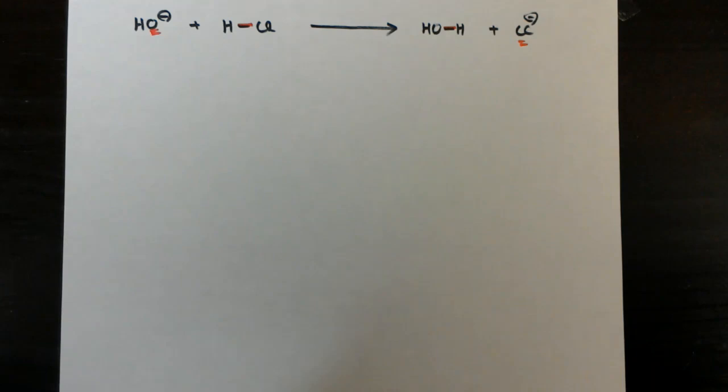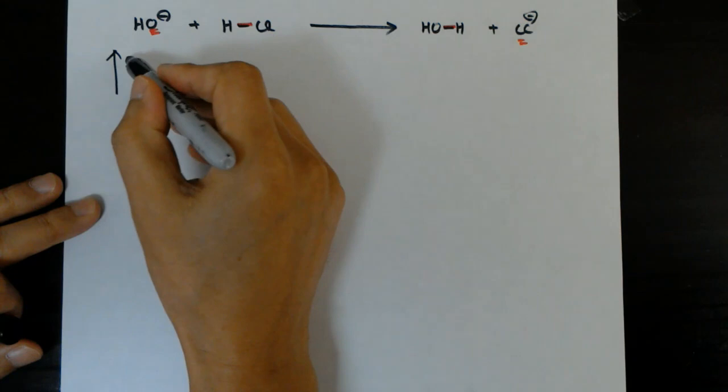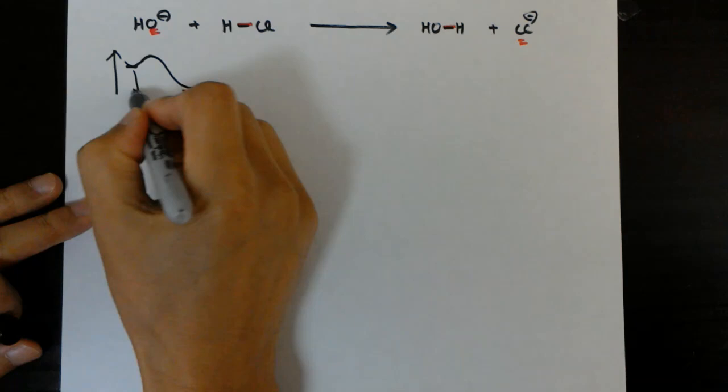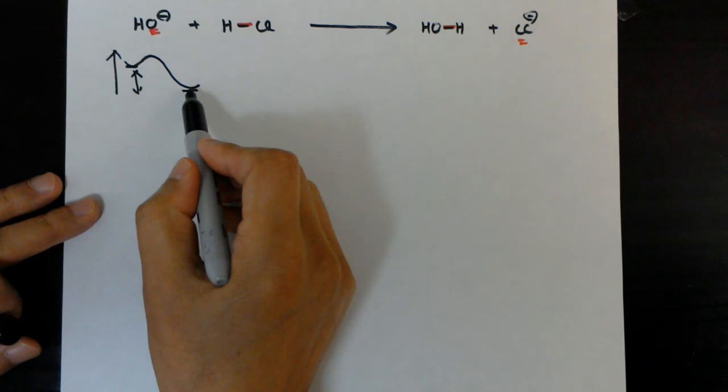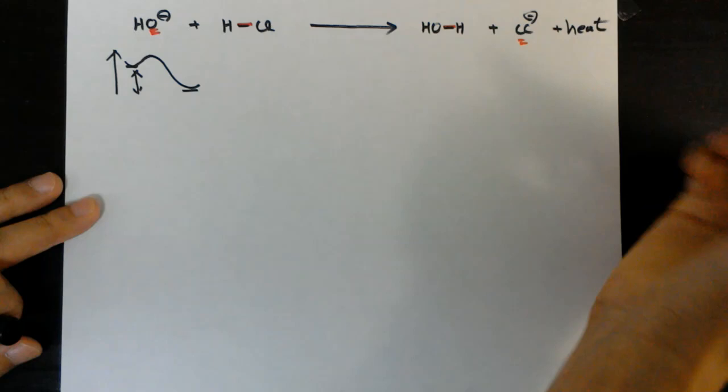You have an exothermic reaction going through the transition state, which we'll talk about briefly later. That amount of heat of formation comes out of the reaction. So in the chemicals, you have that much less energy that came out as heat energy — that's what we measure.